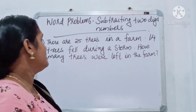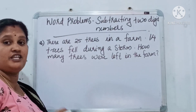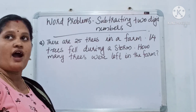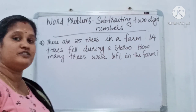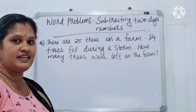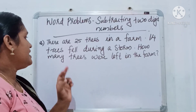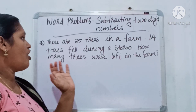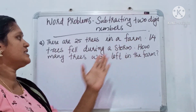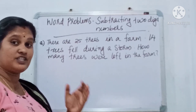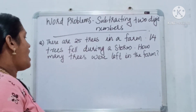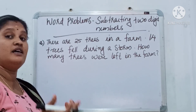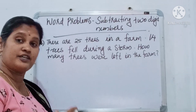What is the question? There are 25 trees in a farm — 25 trees are there. 14 trees fell during a storm. How many trees were left in the farm?